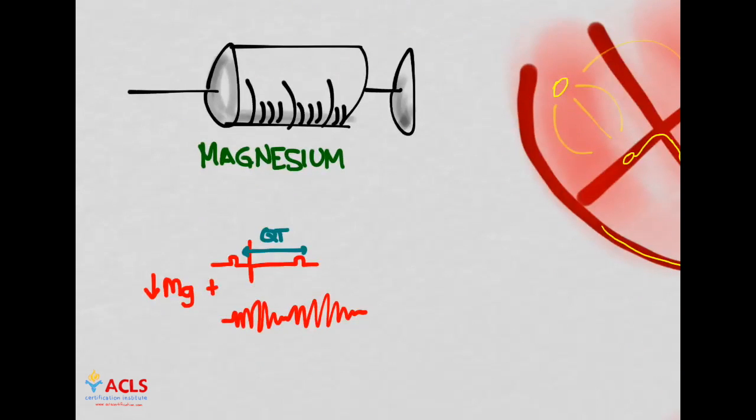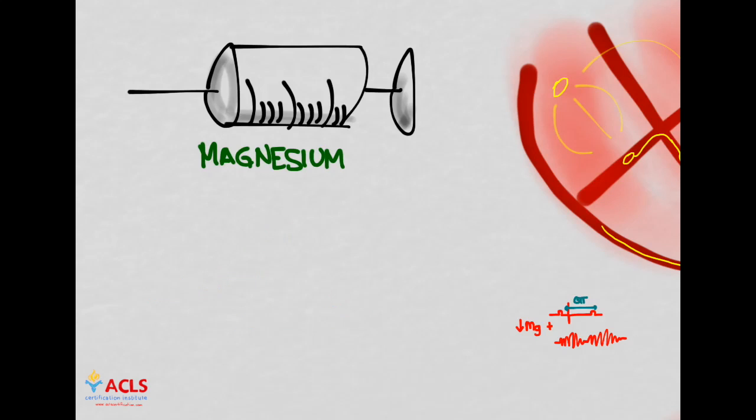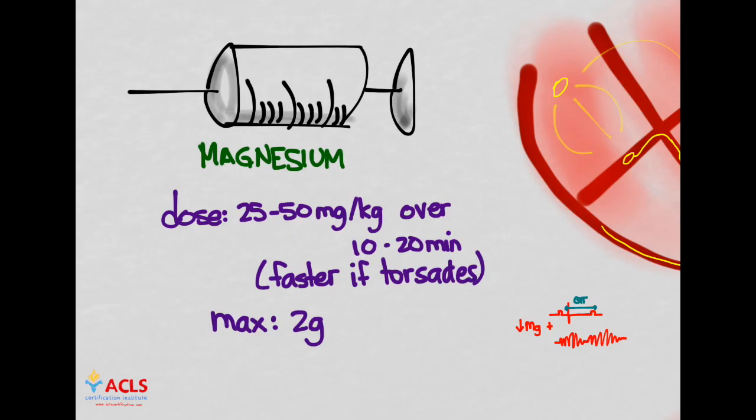The next medication is magnesium. Magnesium is only indicated when you have documented hypomagnesemia, that is low magnesium levels, and either a prolonged QT interval or the patient is in torsades. The dose is 20 to 50 mg per kg over 10 to 20 minutes. You give it slowly because it can cause hypotension.